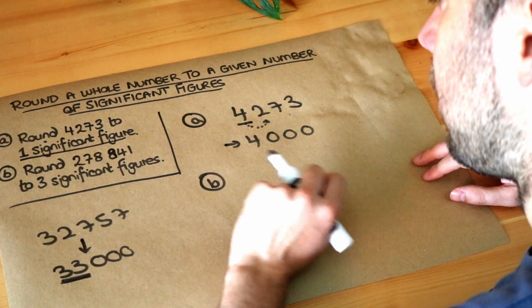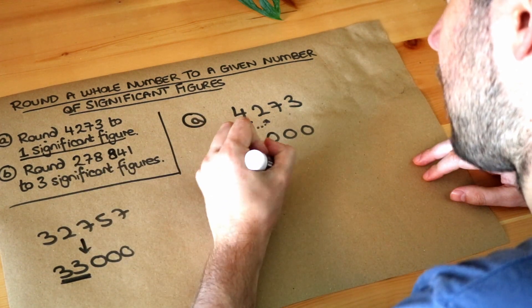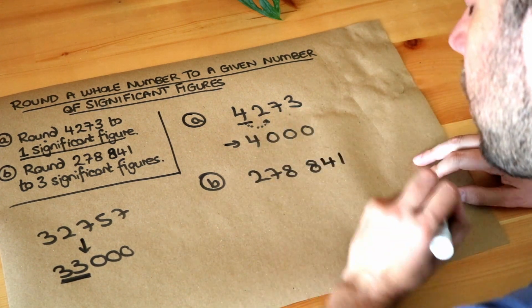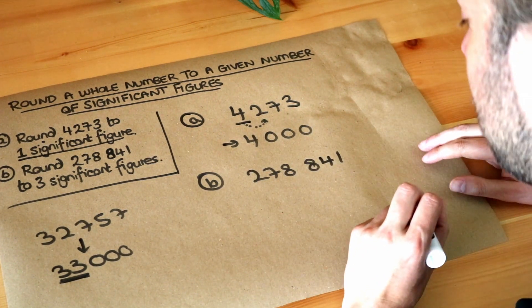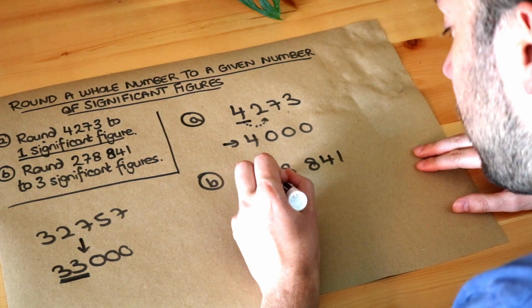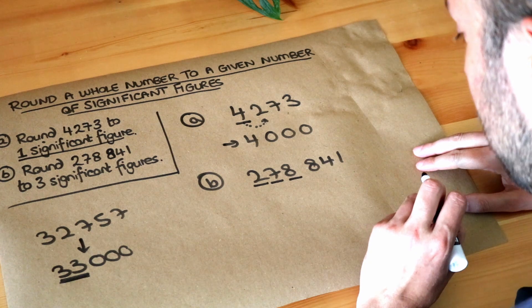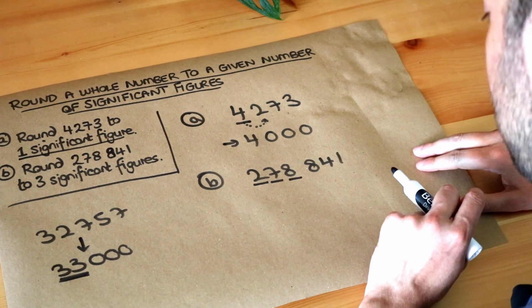What about the next one? We want to round 278,841 to three significant figures. So we're going to keep one, two, three digits at the start of the number and the rest are going to be wiped out to zero.